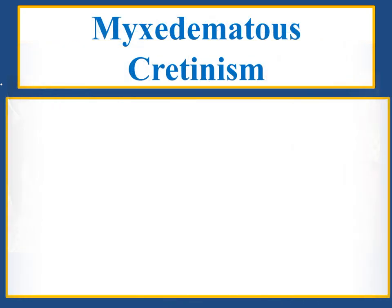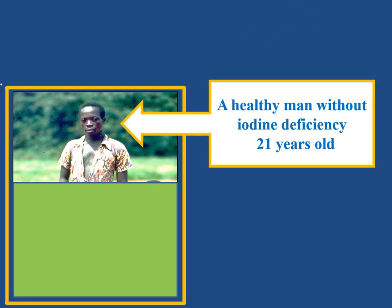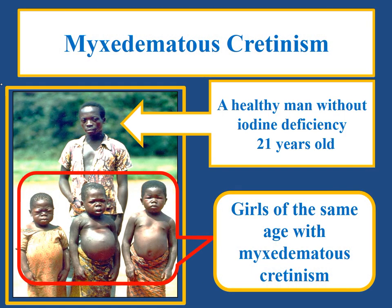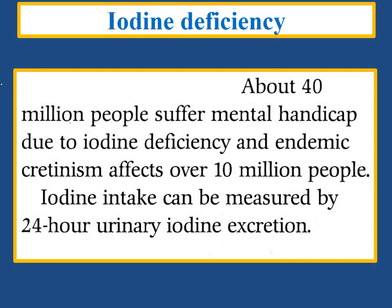Here we can see persons with neurologic cretinism and mixed myxedematous cretinism. Mixed myxedematous cretinism is considered a result of iodine deficiency and hypothyroidism in the fetus during late pregnancy or in the neonatal period, resulting in mental retardation, short stature, goiter, and hypothyroidism. In this picture you can see a healthy 21-year-old man without iodine deficiency and a girl of the same age with mixed myxedematous cretinism. About 40 million people suffer mental handicap due to iodine deficiency, and endemic cretinism affects over 10 million people.